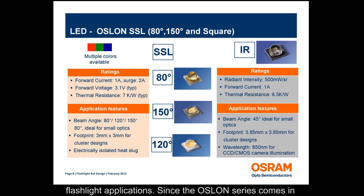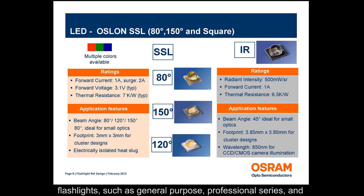Other features such as availability of multiple colors and infrared in the same package type, isolated heat slug, and the ability to be driven up to 1 amp, also make the Oslon series ideal for flashlight applications. Since the Oslon series comes in various flux bins, it is well suited for various types of flashlights, such as general purpose, professional series, and tactical, with any output level.